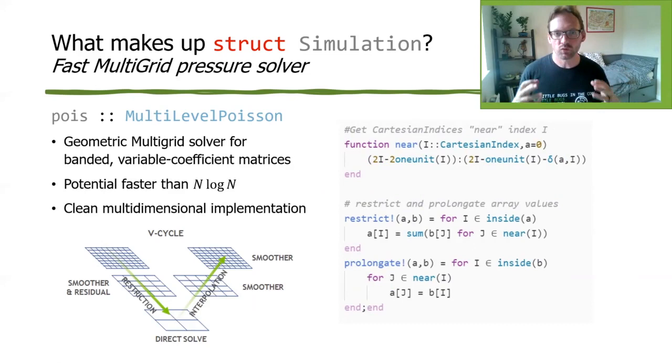So that's the velocity momentum. But what about pressure? To get pressure in a flow solver, you have to solve a big matrix equation. And while Julia has a bunch of linear algebra systems that could solve this, for performance reasons, we wrote our own geometric multigrid solver, which is really fast, maybe faster than n log n for this particular type of problem.